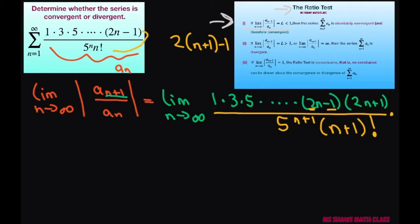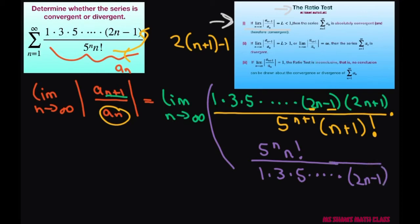Now we're going to multiply this by the reciprocal because we're really dividing. So if you multiply by the reciprocal, and I should have saved some room here but I didn't, the reciprocal is just going to be 5 to the power of n times n factorial divided by 1 times 3 times 5 times dot dot dot times 2n minus 1.